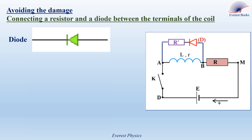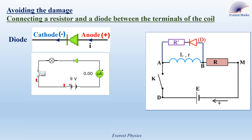The diode is an electrical component that allows the flow of current only in one direction, and it has two terminals: the positive terminal called the anode, and the negative terminal called the cathode. In the first simulation, the anode is connected to the negative pole of the battery and the cathode to the positive pole. The diode is reverse biased and acts as an open switch, so it does not allow the current to pass through it. The ammeter reads zero current.